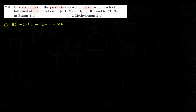Kahan use karte hain is reagent ko? Yeh use kiya jaata hai to distinguish between primary, secondary, and tertiary alcohols. Reaction ke liye hum yahan par lenge ek alcohol — ROH — uski reaction karwai HX (hydrogen halide) ke saath, to kya milega? Aapko milta hai RX alkyl halide and saath mein H2O. Agar aap reaction karwa rahe hain HCl ke saath to milega alkyl chloride.